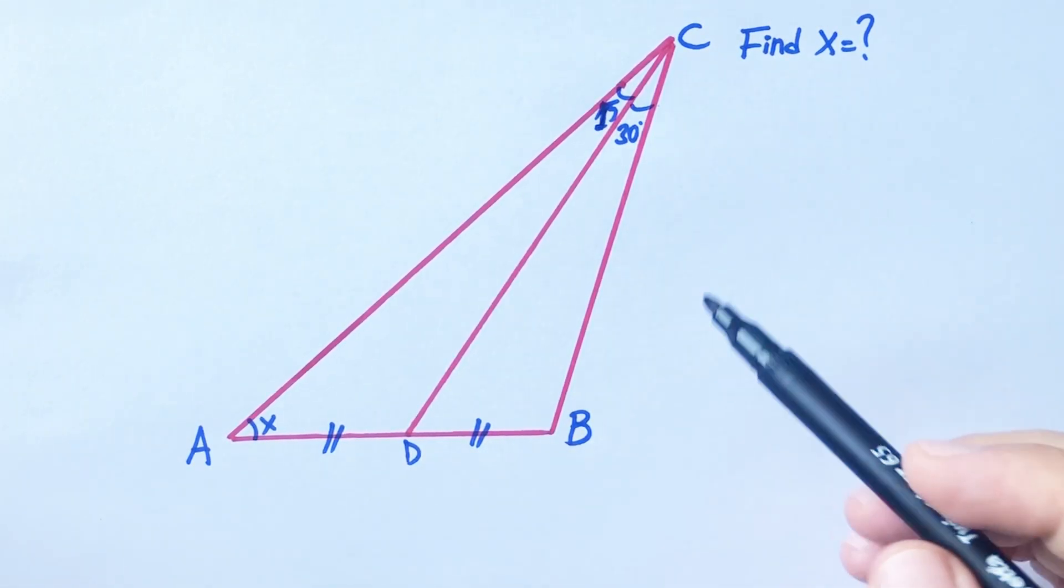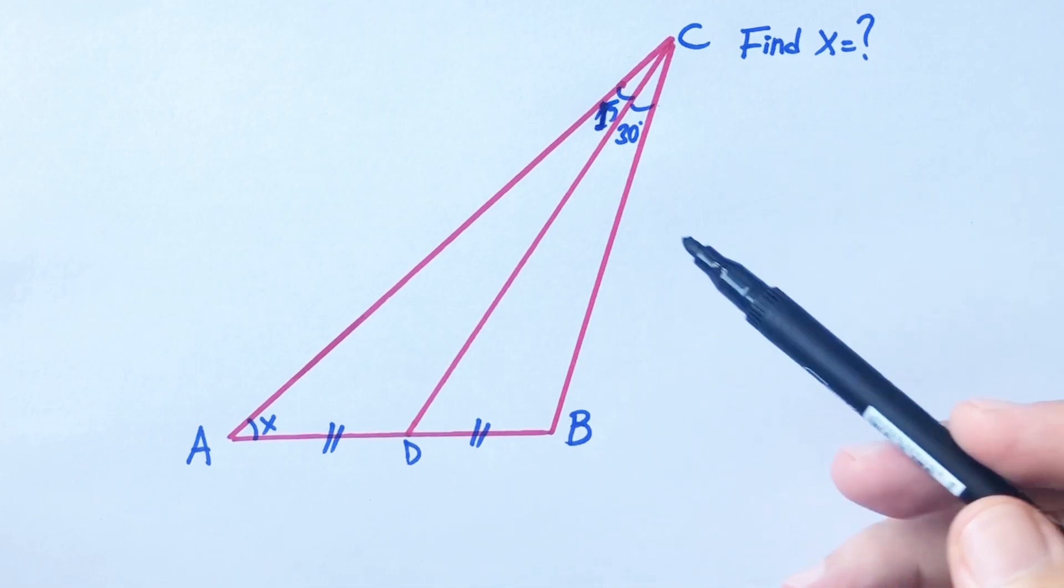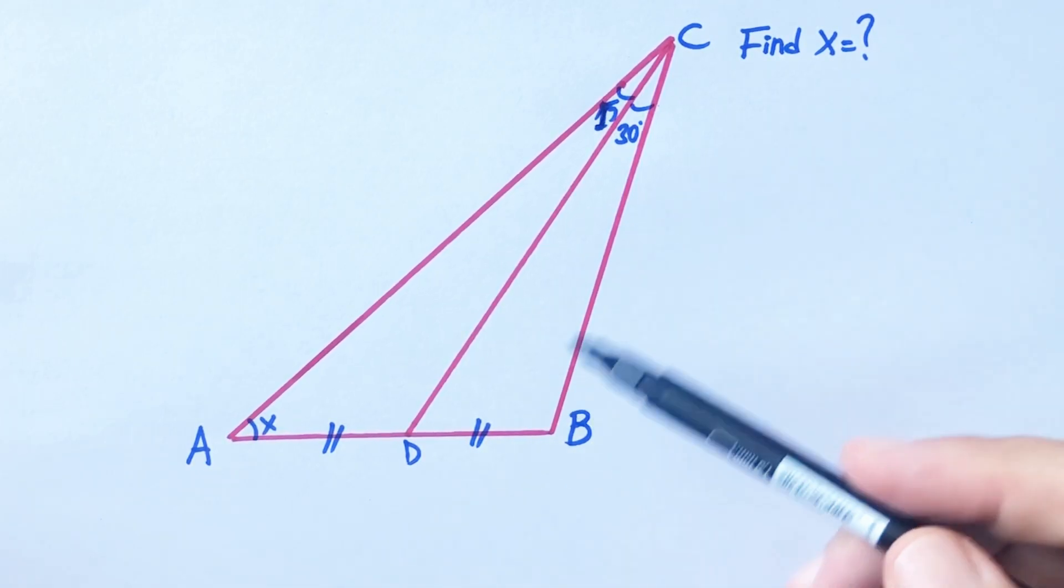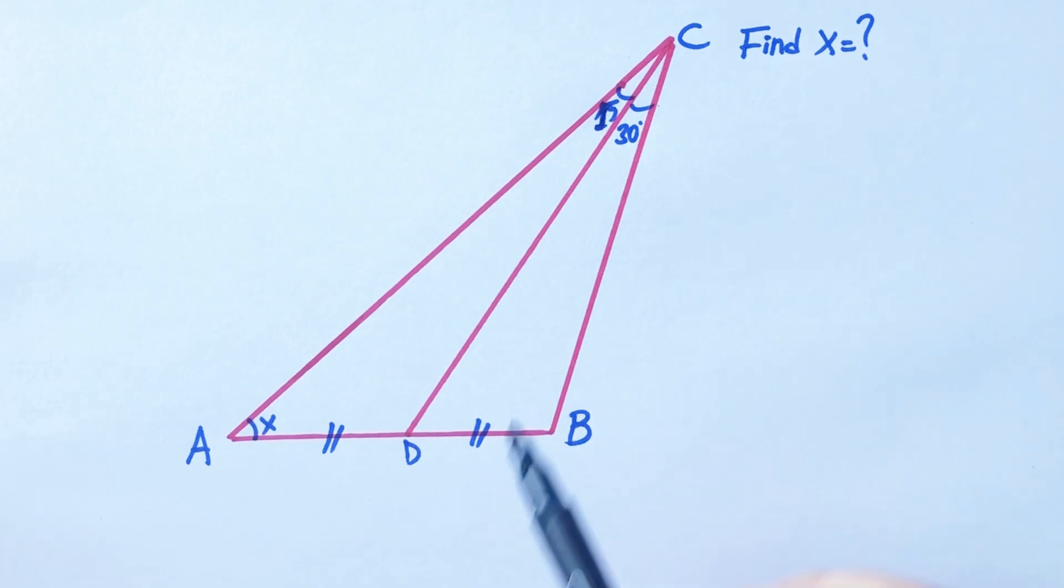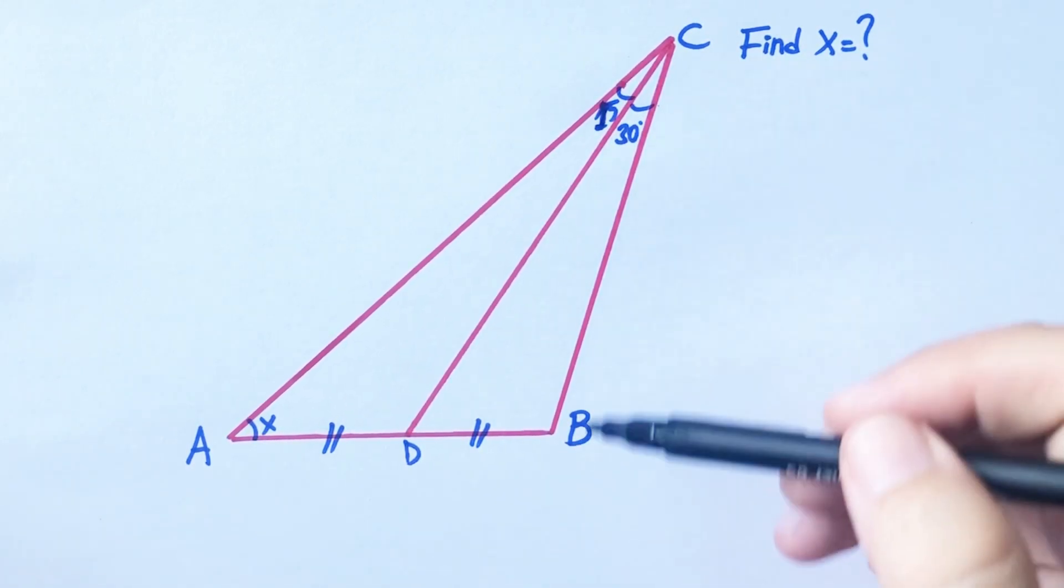First of all, we know that in this kind of spatial question we need an equilateral or isosceles triangle. Therefore, I want to create an equilateral triangle.